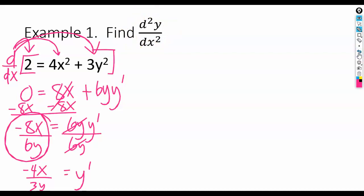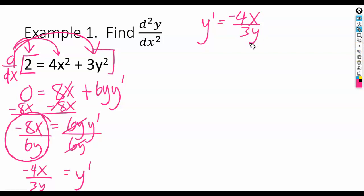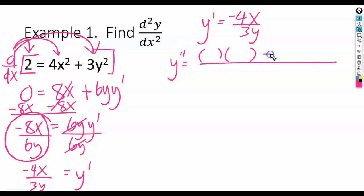We do want to find the second derivative, and as you know, that means we're just going to find the derivative again. So I'm going to take this expression here and take the derivative of it again. To do this, we're going to start off by doing the quotient rule. The second derivative will be: low, d-high, minus high, d-low, draw a line, and square the bottom.